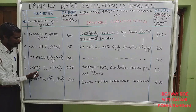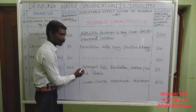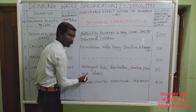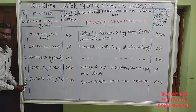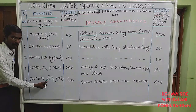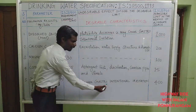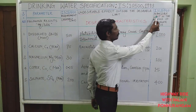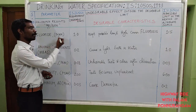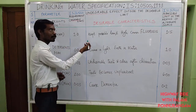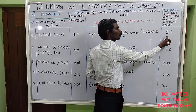The fourth desirable characteristic is copper (Cu). The maximum desirable limit is 0.05. Beyond this, it causes astringent taste, discoloration, and corrosion in pipes and utensils for domestic purposes. The maximum permissible limit is 1.5. The fifth is sulphate (SO4) — maximum desirable limit is 200, causing gastrointestinal irritation; maximum permissible limit is 400. The sixth is fluoride — maximum desirable limit is 1, and it should be kept as low as possible. High fluoride causes fluorosis. The maximum permissible limit is 1.5.